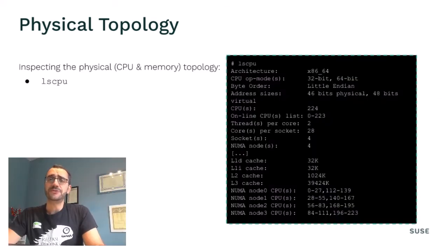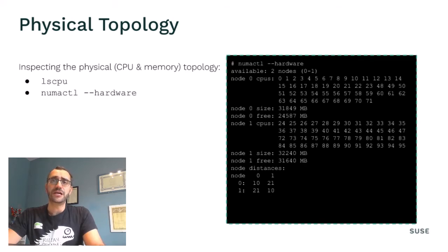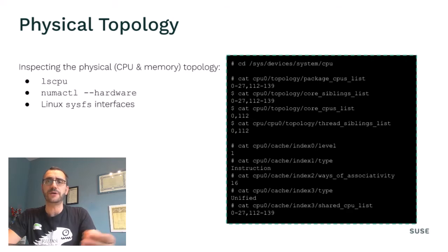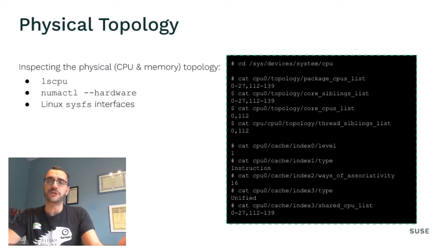On a standard Linux system, there are multiple ways of analyzing the topology. For instance, just using lscpu will already reveal a lot of useful information. NumaCTL --hardware is another way to inspect how the CPUs and the memory are arranged in NUMA nodes. Linux also offers a convenient set of interfaces for checking which CPUs are part of which core and package, what other CPUs they share resources with, and much more, all available within the SysFS special file system, which means they can be queried from programs and scripts.